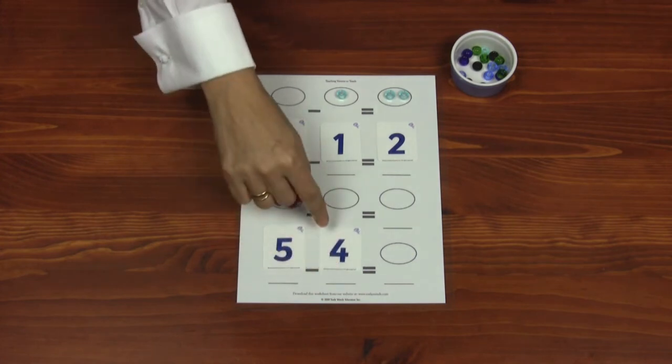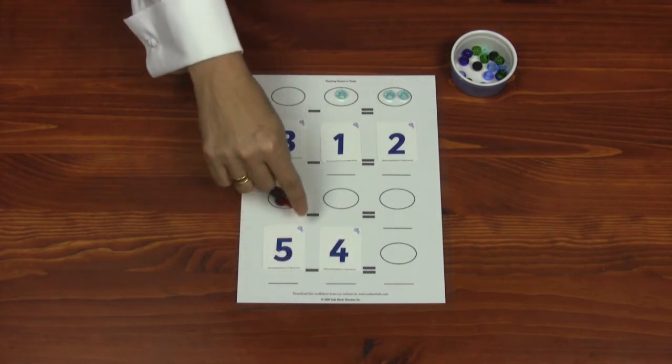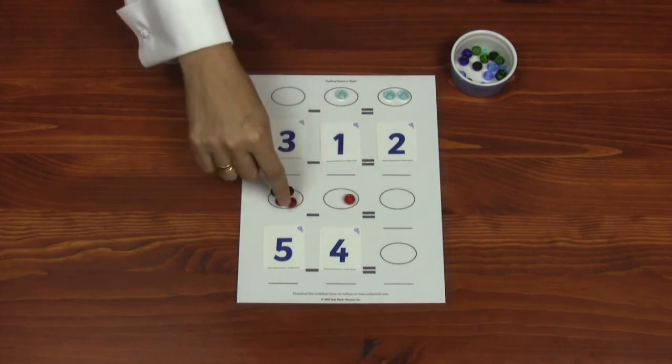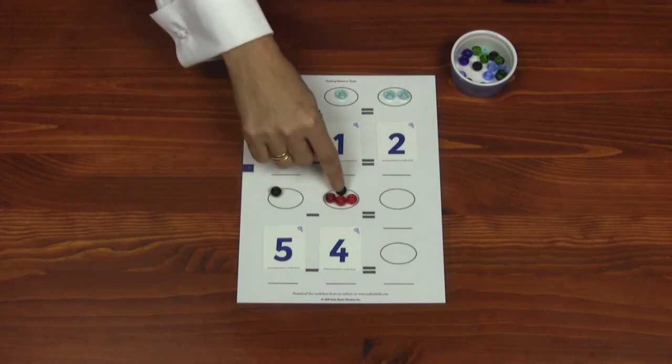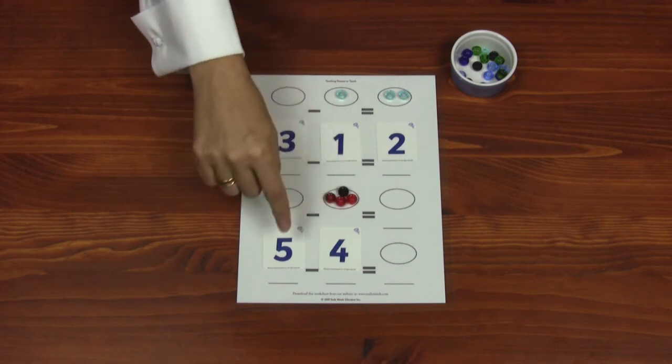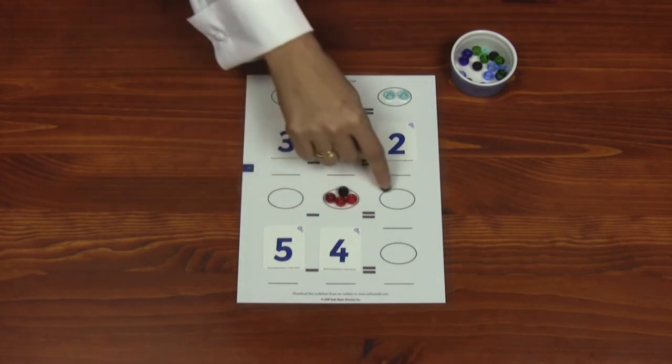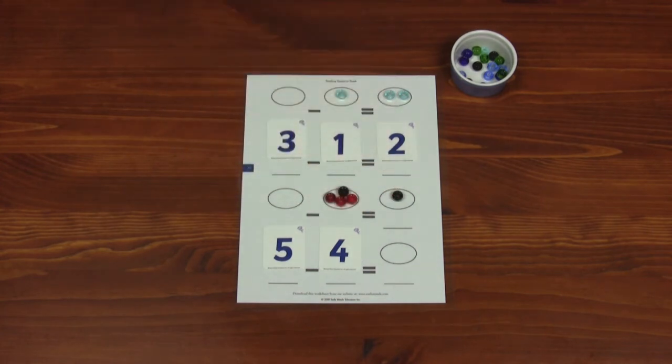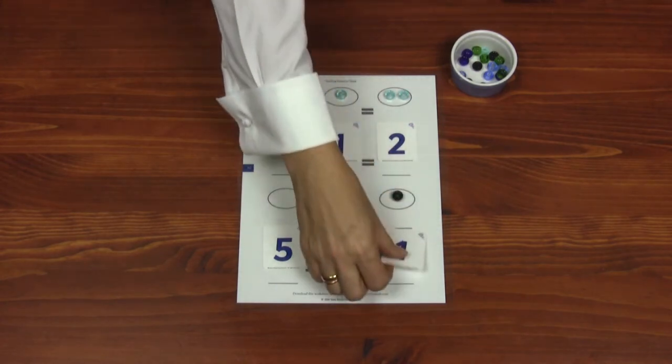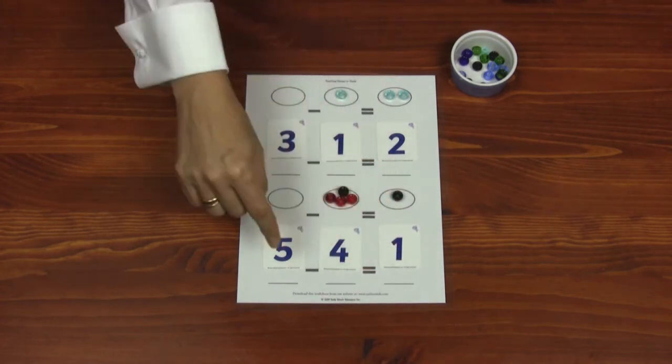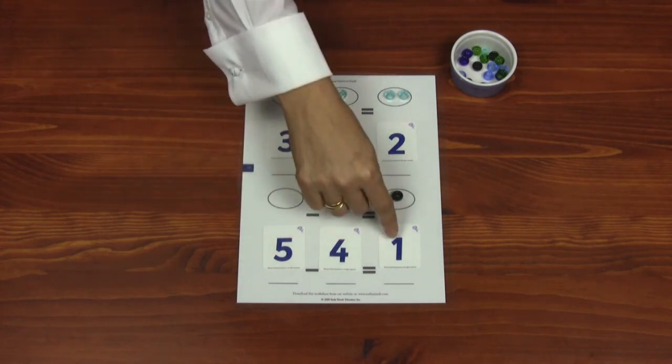Four. Five minus four. One, two, three, four. Five minus four equals one. One. Five minus four equals one.